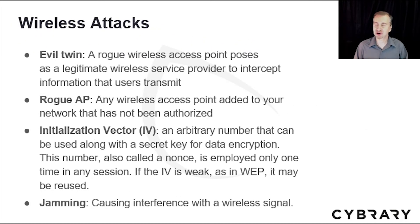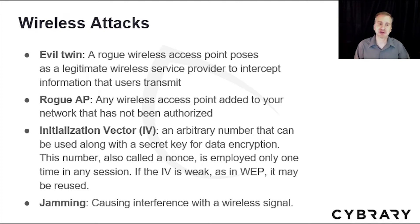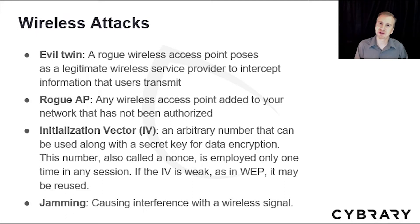Wireless networks are also under attack. One method is using an evil twin, where the attacker installs a wireless access point that acts like the legitimate one installed by a known service — a rogue wireless access point posing as a legitimate wireless service provider to intercept user data. A rogue access point is any wireless access point added to your network without authorization, such as an employee plugging in their own access point purchased from a store into your production network.